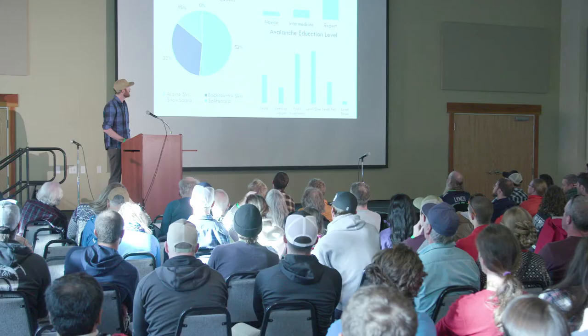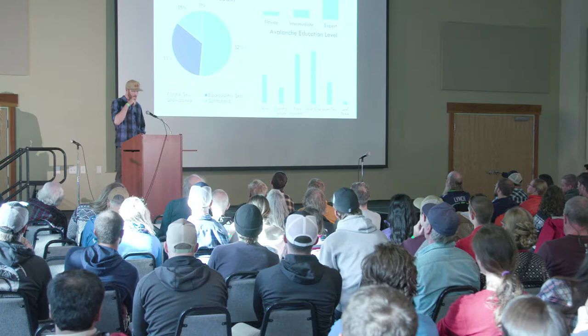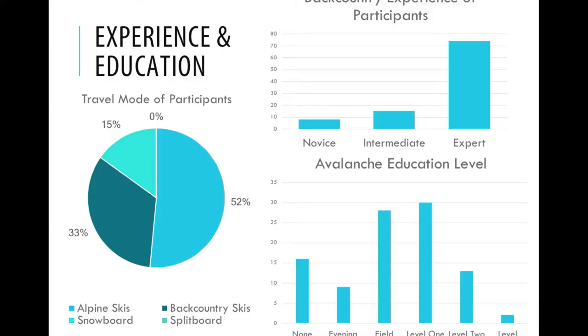Looking at people's self-rated backcountry experience: we have a huge majority rating themselves as expert-level backcountry skiers. But if you look at the bottom right, the majority of people have never taken a formal avalanche class. So a good chunk of people have no avalanche education whatsoever, dwindling down as we get into higher levels of formal avalanche education. The self-rated experience versus actual education doesn't necessarily match up for our group.